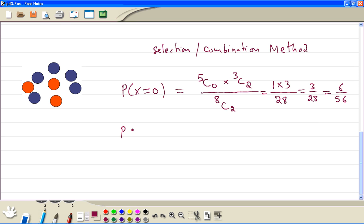Then the probability x is equal to 1. This means we're choosing 1 blue. So 5 choose 1 times 1 red. So 5c1 is 5. 3c1 is just 3 divided by 28. So this is 15 out of 28. Or we can call it 30 out of 56.